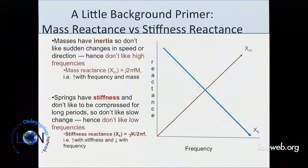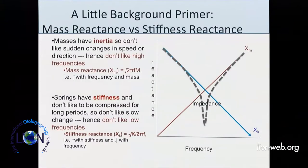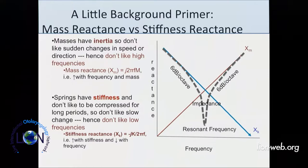If the system is stiffness-dominated, the reactance goes down with frequency — more impedance at low frequencies. At some point every system has both a reactance and a mass to transfer energy back and forth. At the point where reactance is minimal, you get maximum energy transfer between mass and stiffness — that's the resonant frequency. You can tell a stiffness-dominated system by the slope of the curve, about 6 dB per octave as you double frequency.